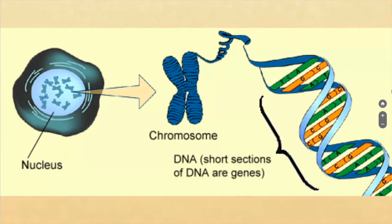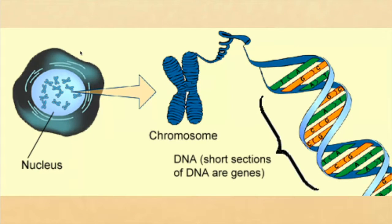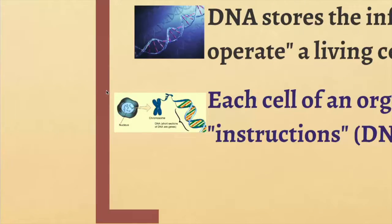Your DNA gets packaged into chromosomes, which then sit inside your cells. You can see here that a cell has multiple chromosomes because it contains a full set — every piece of DNA that any cell in your body would possibly need.